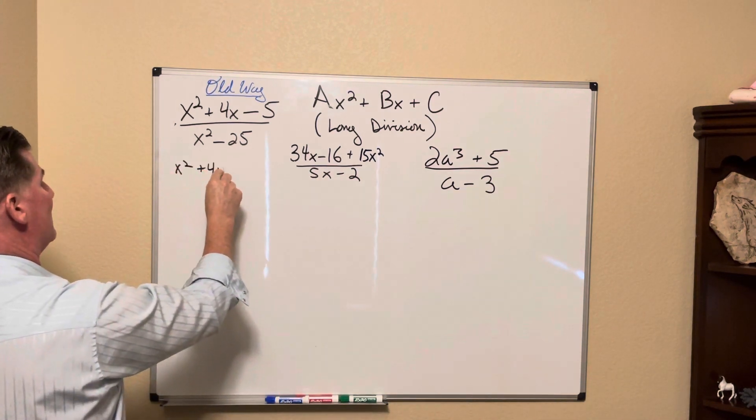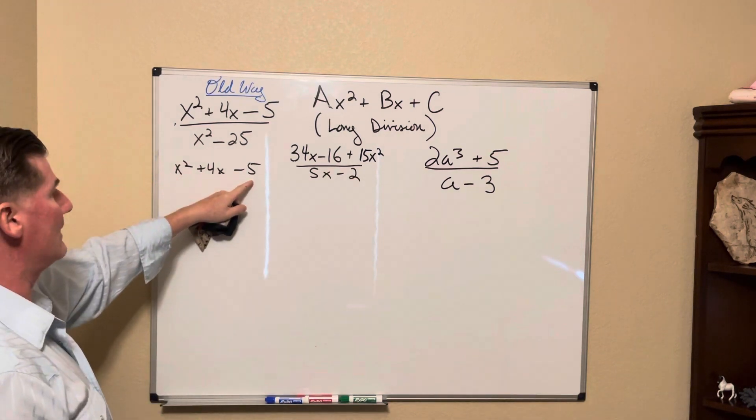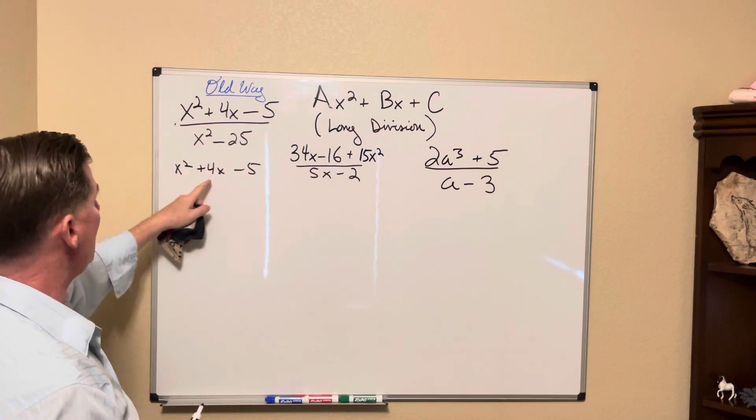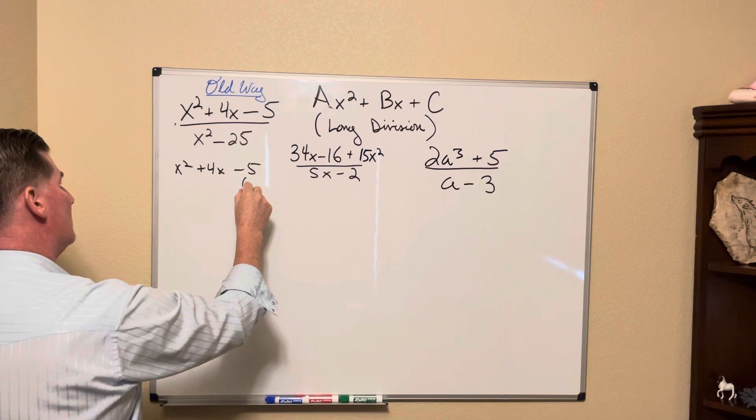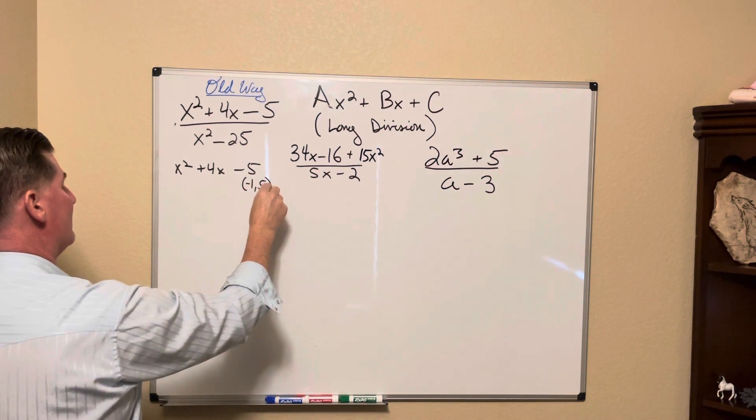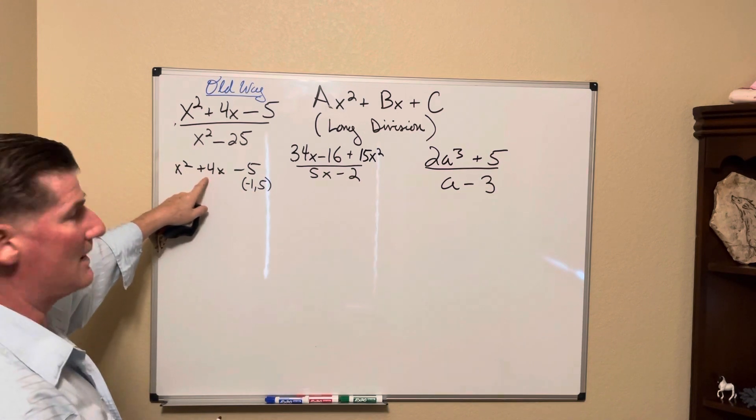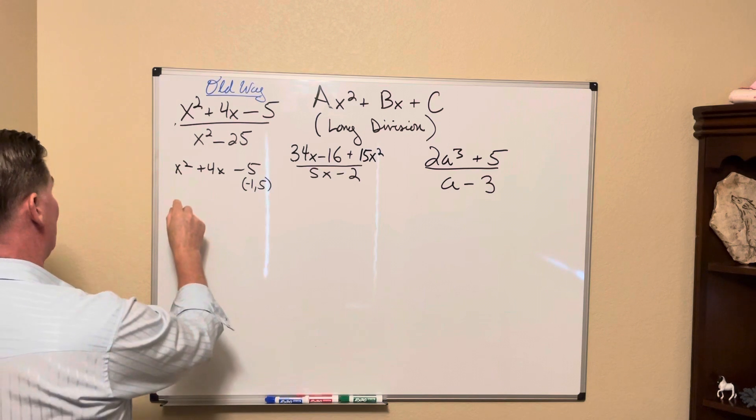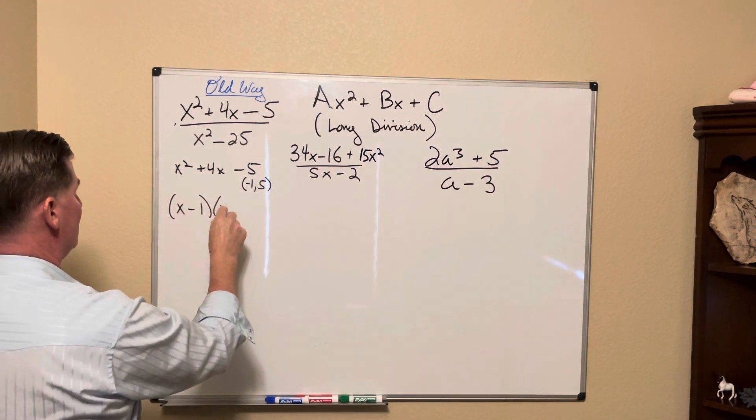For example, x squared plus 4x minus 5. Well, that's a 1. So all we have to do is find what two numbers multiplied gives us negative 5, then when added together it gives us a 4. We can find out negative 1 and 5. Negative 1 times 5 is negative 5. Negative 1 plus 5 is going to give us a positive 4, or 5 minus 1 gives us a positive 4. And we simply write that as x minus 1 and x plus 5.